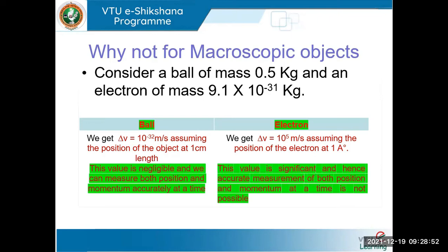An error in velocity of order 10⁻³² m/s has no significance at the macroscopic scale — it is negligible, and we can measure both position and momentum with a certain degree of accuracy. But for an electron, the same procedure gives Δv of the order of 10⁵ m/s, which is very significant. That is why error in simultaneous measurement of position and momentum must be taken into consideration for microscopic objects.